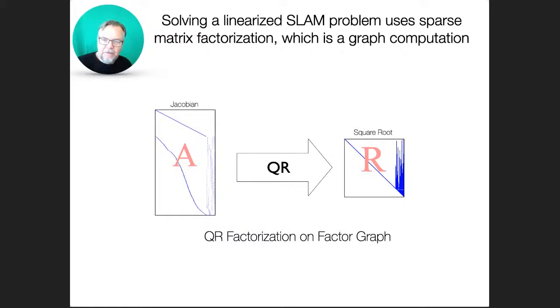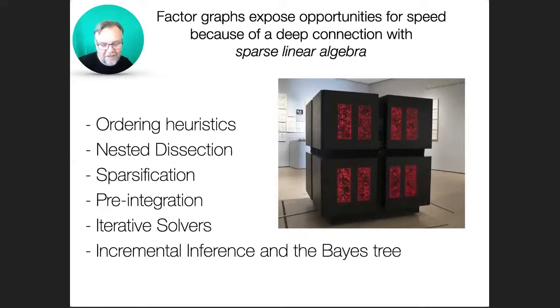Now, when you show these matrices, they make no sense. What is this matrix, what is that upper triangular matrix? It doesn't seem to have obvious structure, and that's why factor graphs are so important. They give you the structure of the problem, they show you what ordering heuristics might work, how you could maybe divide up the graph, how you can sparsify by merging nodes and measurements. Sometimes they lead to new algorithms like pre-integration or iterative solvers.